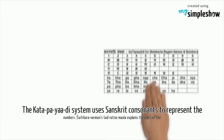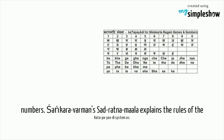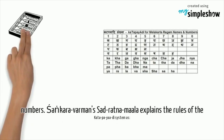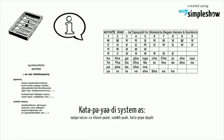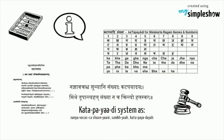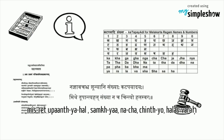The Kata Piyadi system uses Sanskrit consonants to represent numbers. Sankaravarman's Sadratnamala explains the rules of the Kata Piyadi system as: 'Nanyavakasya Shunyani Samkhya Kata Piyadea. Misretupanthya Hal Samkhya Nacha Chinthya Halasvara.'